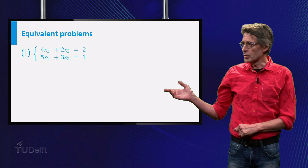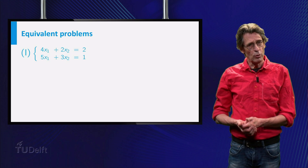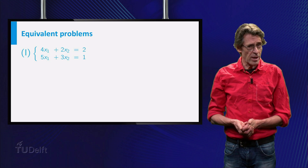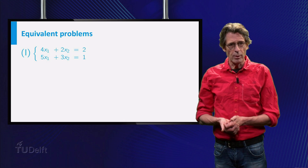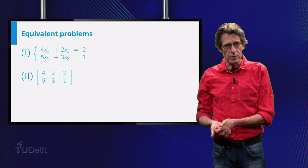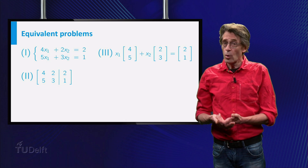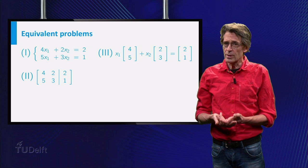Have a look at the small example on the slide. The system of equations 4x1 plus 2x2 equals 2 and 5x1 plus 3x2 equals 1 can be rewritten using the augmented matrix, which is just an abbreviation, or as a vector equation and now also as a matrix equation.